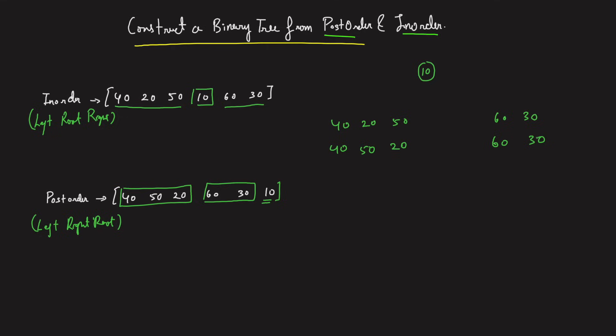The problem reduces to the same question again: given an inorder and a postorder, construct a binary tree. This is a recursive solution — you break the problem into subproblems. Each time, you identify the root from the last element of the postorder, split the inorder into left and right portions, and recursively build the left and right subtrees by creating smaller inorder and postorder arrays.